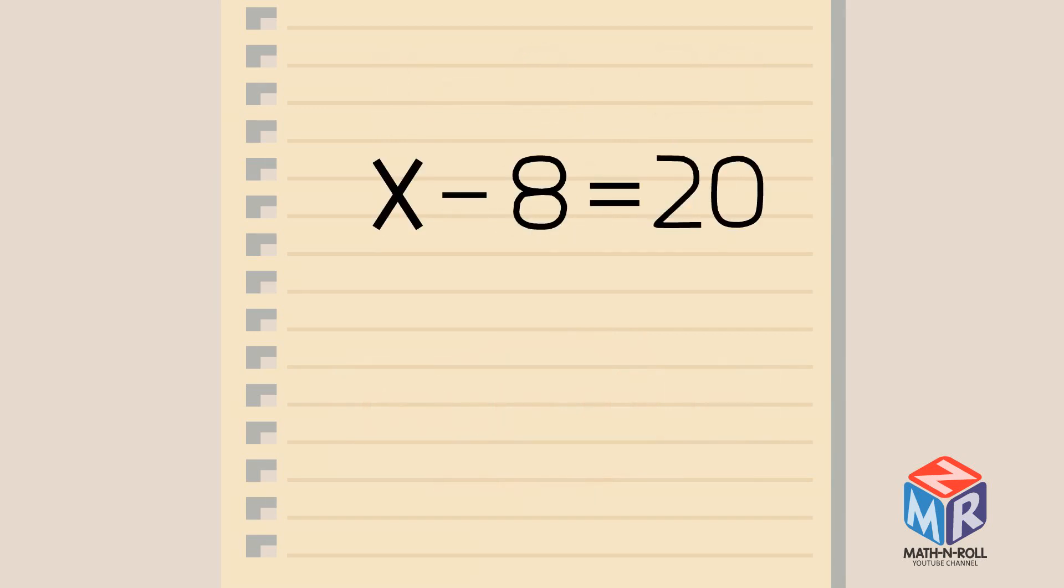An equation is like a balance scale. Two sides are balanced when each side has the same amount of weight. If you add some weight to one side, the scale will no longer be balanced. But if you add the same amount of weight to the other side, the scale will be balanced once again. We follow the same rules for equations. If you add something to one side, it must be added to the other side as well to keep it balanced.